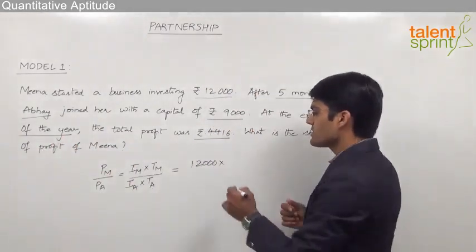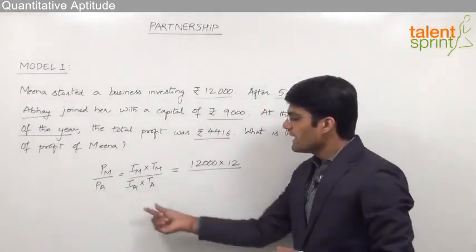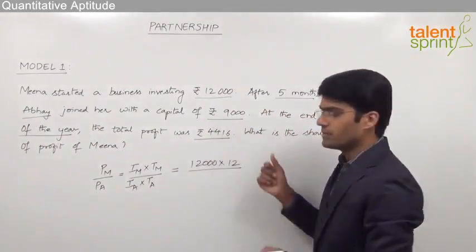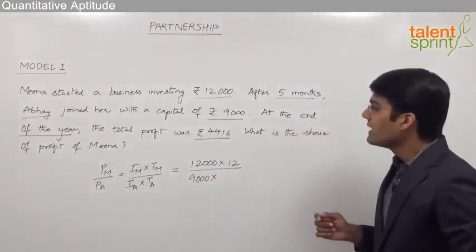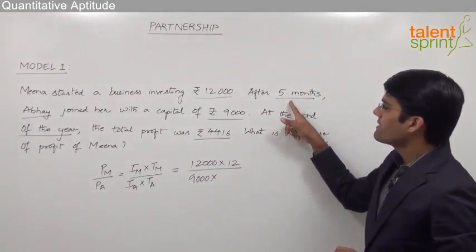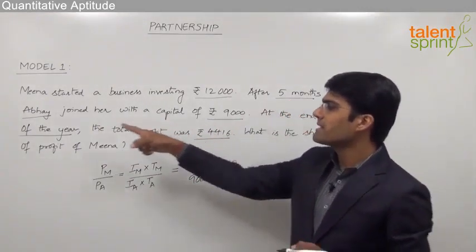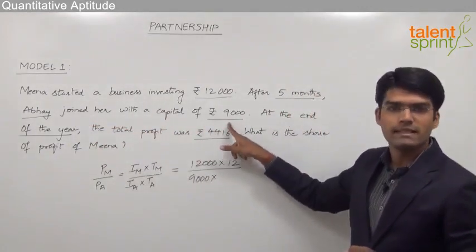We can see that she was there for 12 months divided by the investment of Abhay is 9,000 into the time of Abhay's investment. As you can see here, the question says after 5 months Abhay joined with the capital of 9,000.